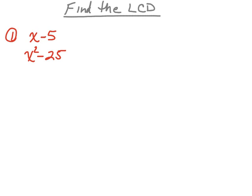In this section we're going to look at how to find the least common denominator in rational expressions. We're going to assume that x minus 5 is the denominator in one of our rational expressions, and x squared minus 25 is the other denominator in that rational expression.